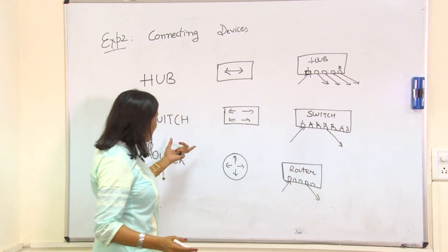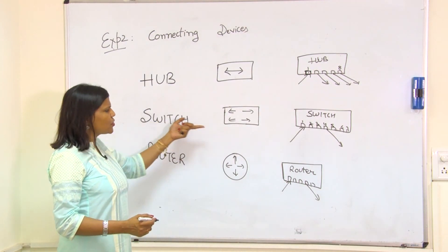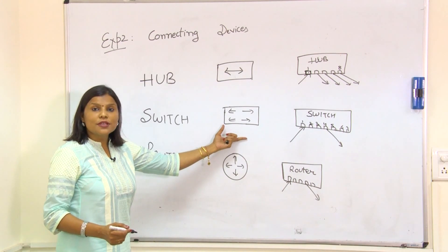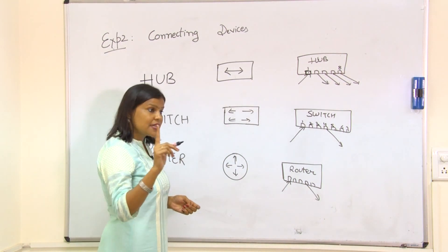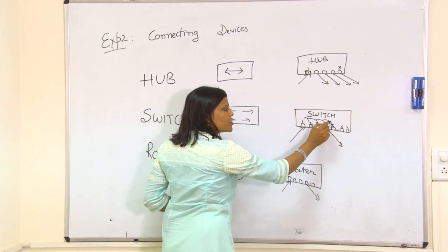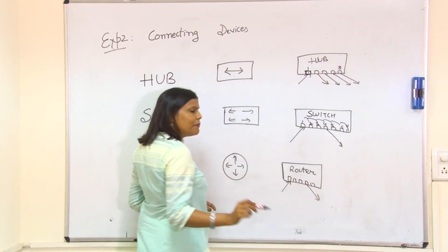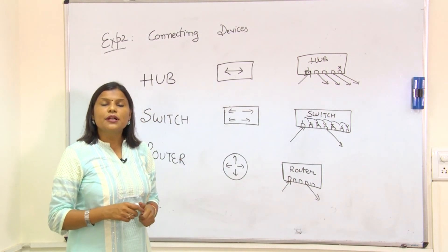Now comes the switch. In Cisco, switch is represented through this symbol. In a switch, the first time the message will be broadcasted to all ports, but with time the switch will develop its own MAC table.